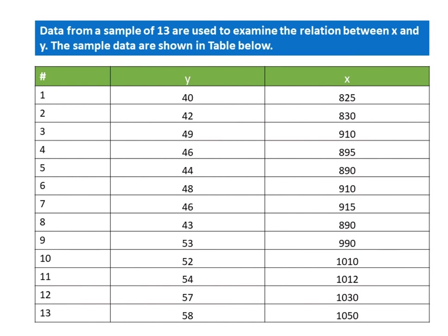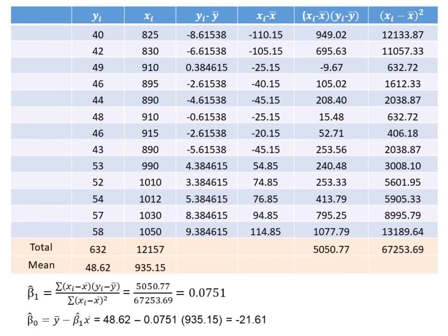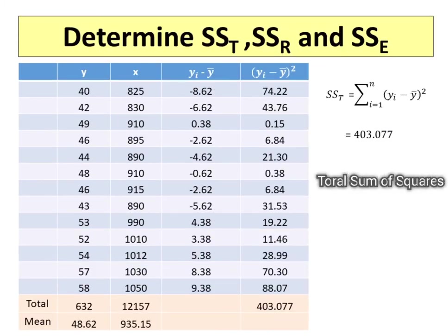Let's take an example. Data from a sample of 13 are used to examine the relation between X and Y. The sample data are shown in the table below. First, estimating the slope beta sub 1, and the result is 0.0751. The intercept beta sub 0 is minus 21.61. The total sum of squares, denoted SST, is the squared difference between the observed dependent variable and its mean. The value is 403.077.